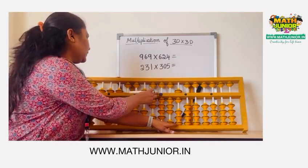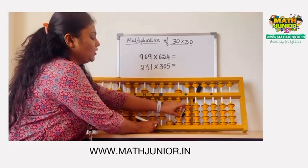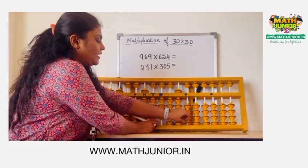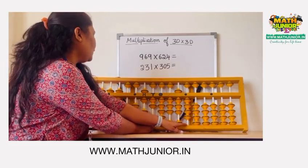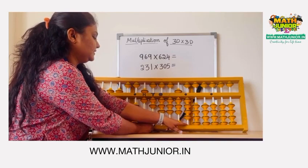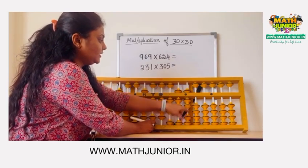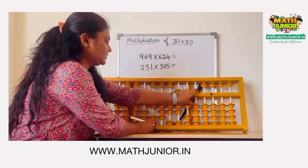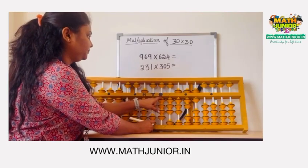So next is 4 times 6 is 24 — 20 and 4. Next, 4 times 9 is 36. 30 means plus 50 minus 26 in the next rod. Then remove 4.